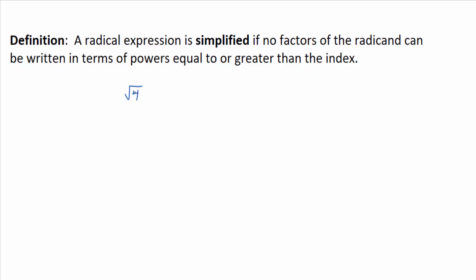No, because the square root of 9 is 3. But we can rewrite it as the square root of 3 squared. The index is 2. Going back to the definition: it's not in simplified form because this power on the 3 is equal to the index. The square root of 3 squared, which is the square root of 9, equals 3, so it's not in simplified form.